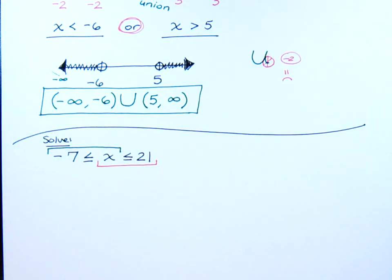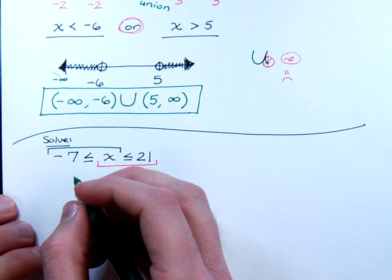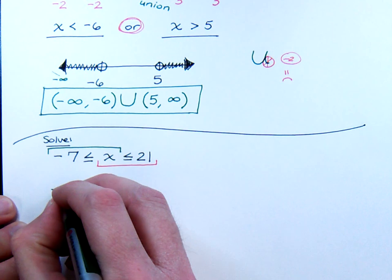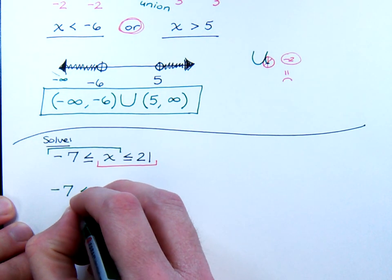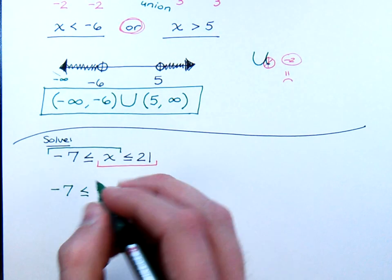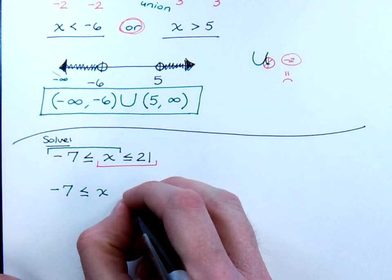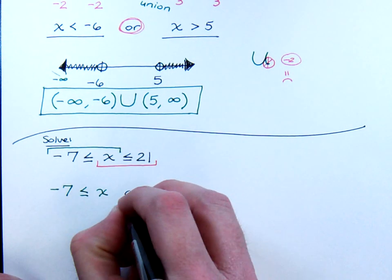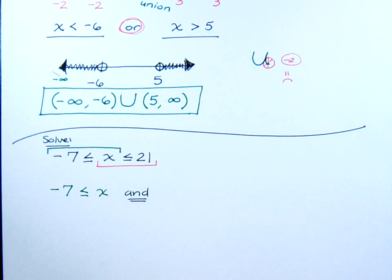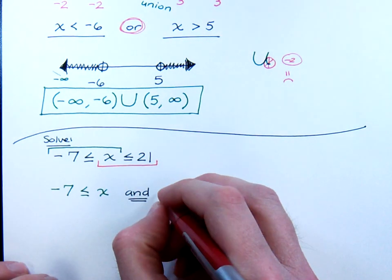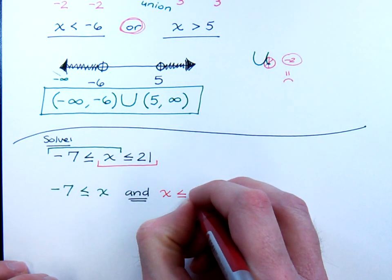This is really understood to be a compound inequality with an intersection. So if I were to rewrite this, it would literally be negative seven is less than or equal to x, and the other part of this that I have, x is less than or equal to 21.